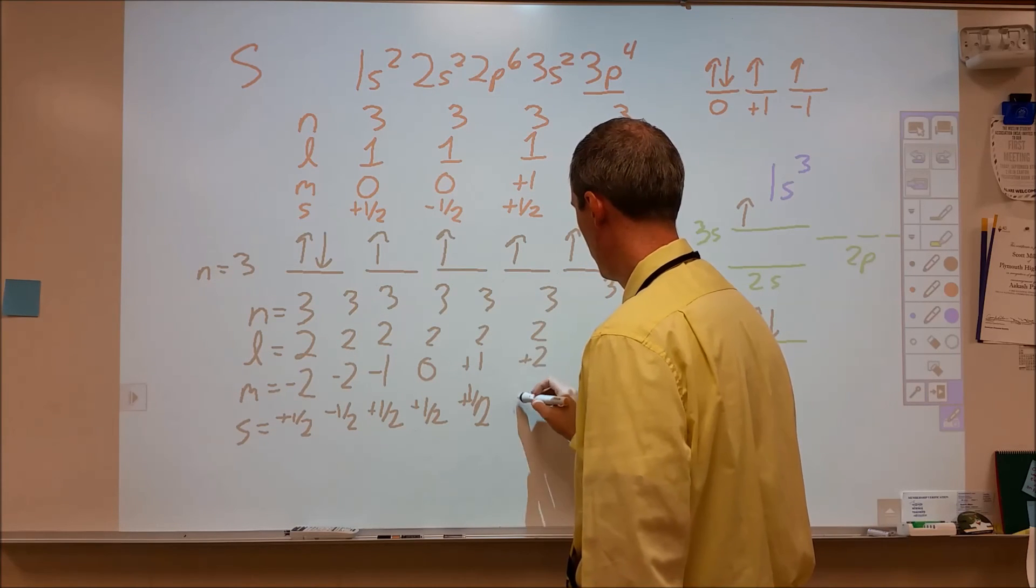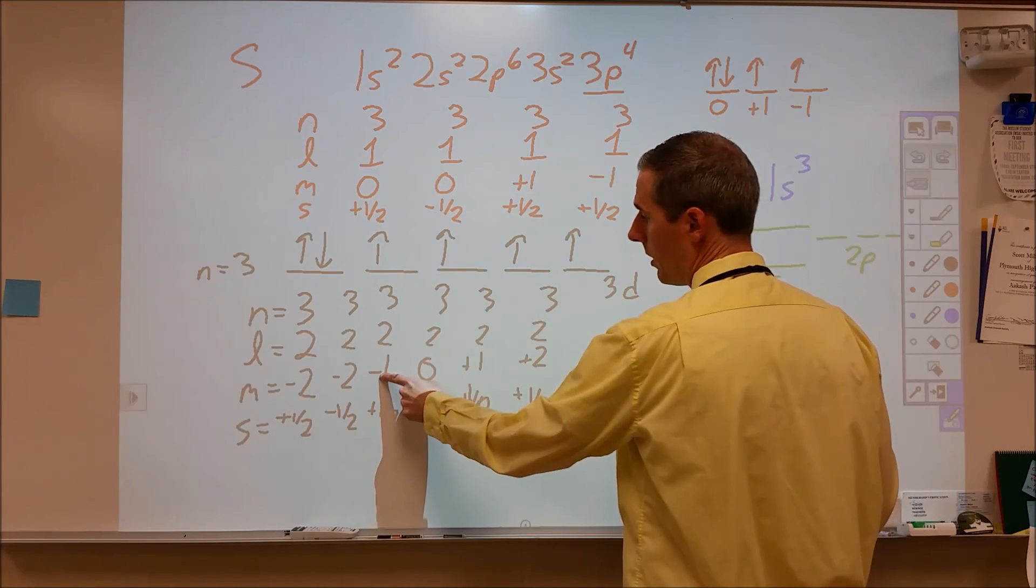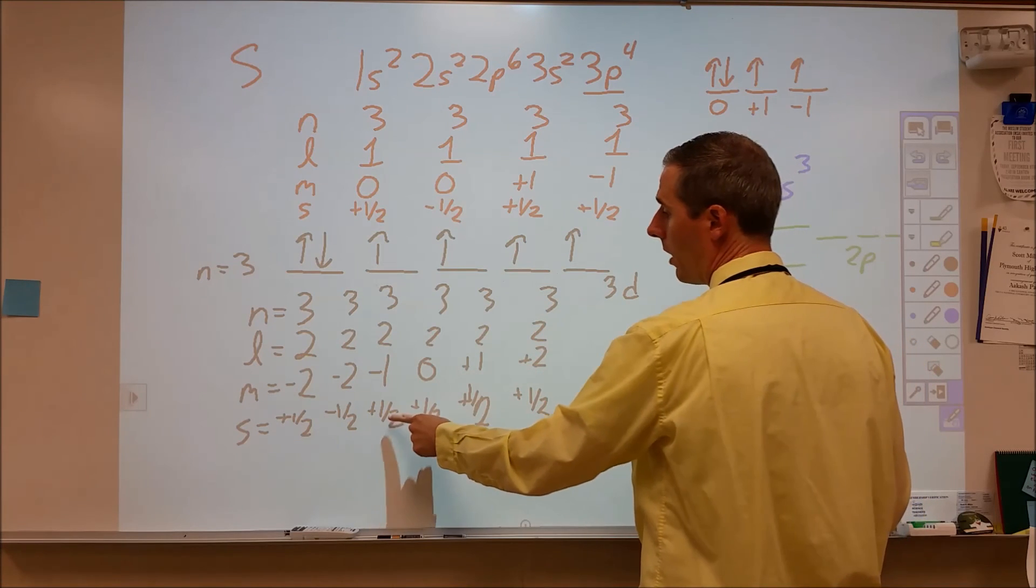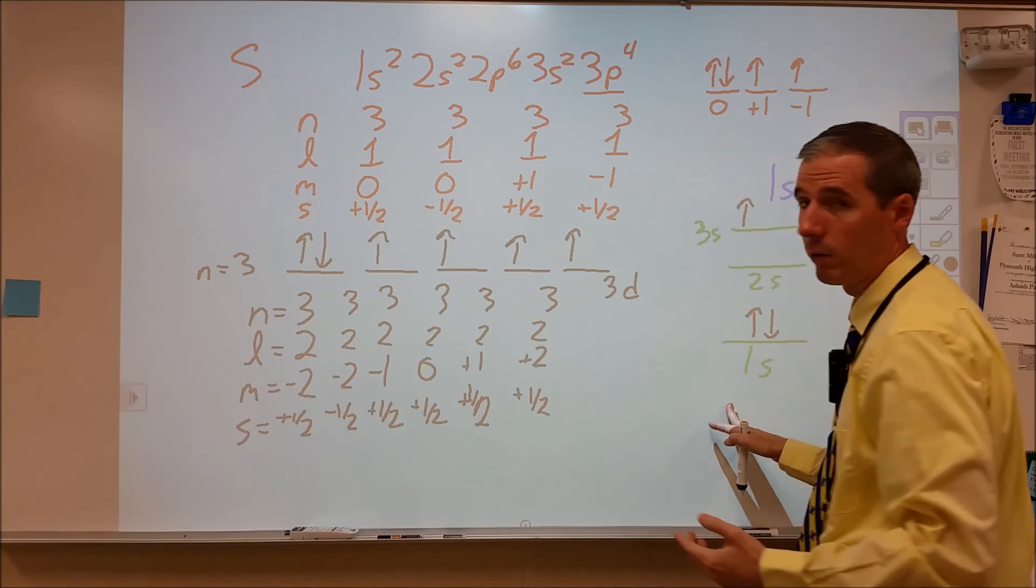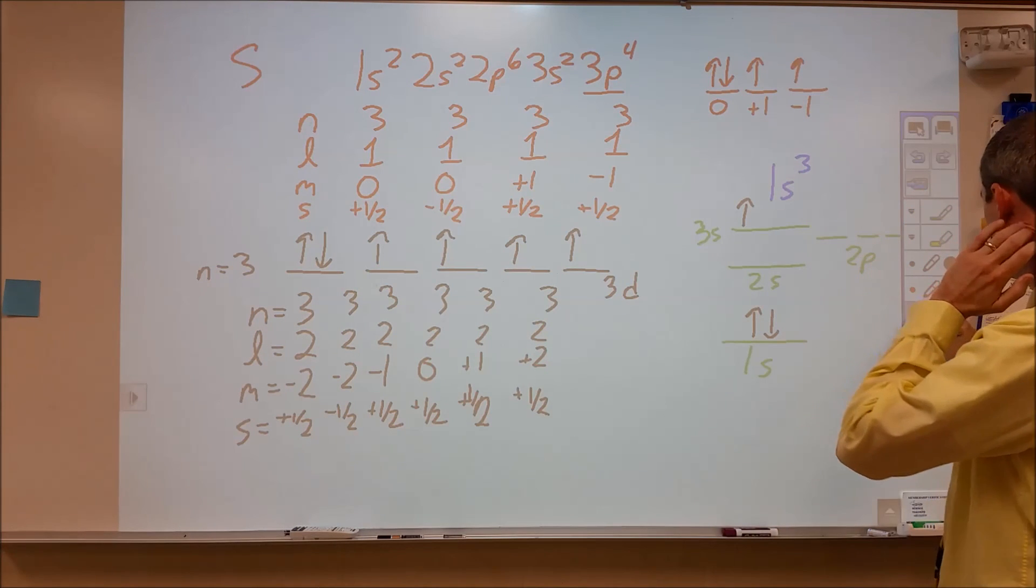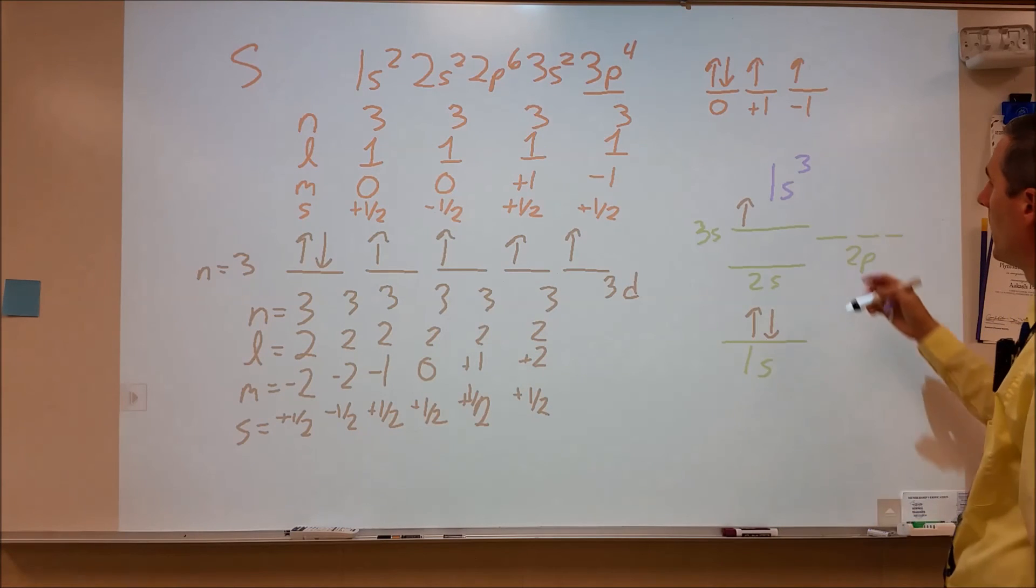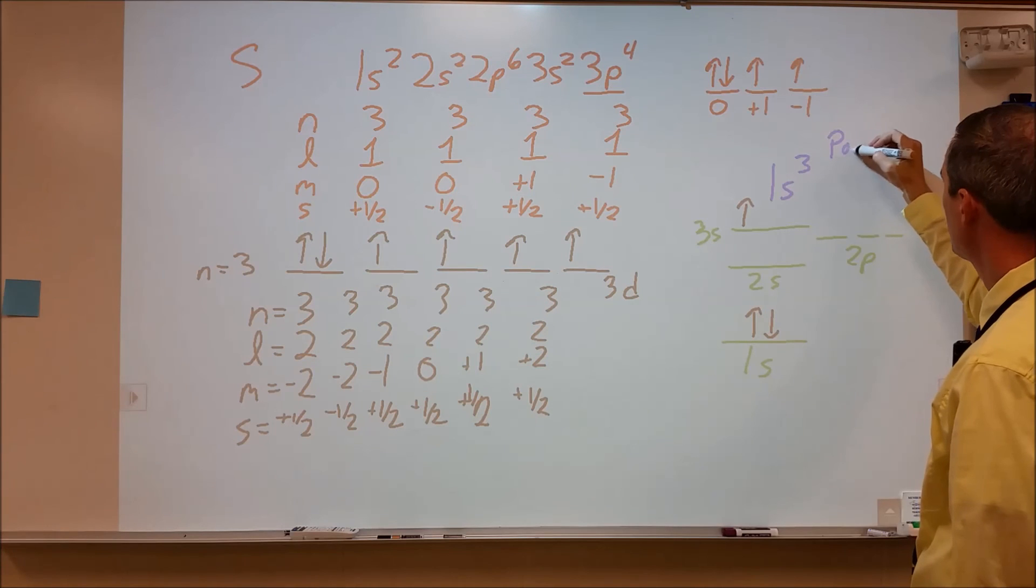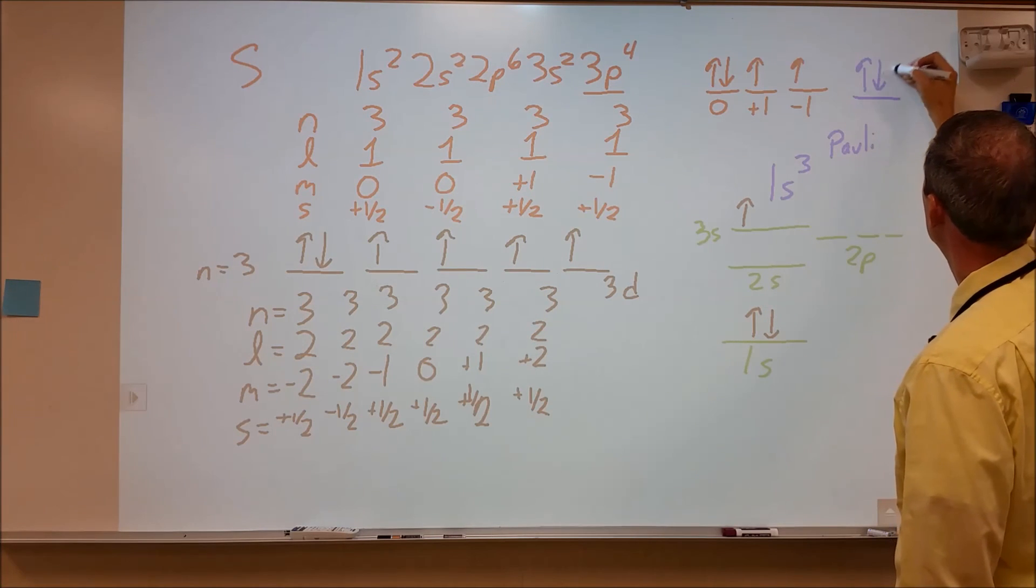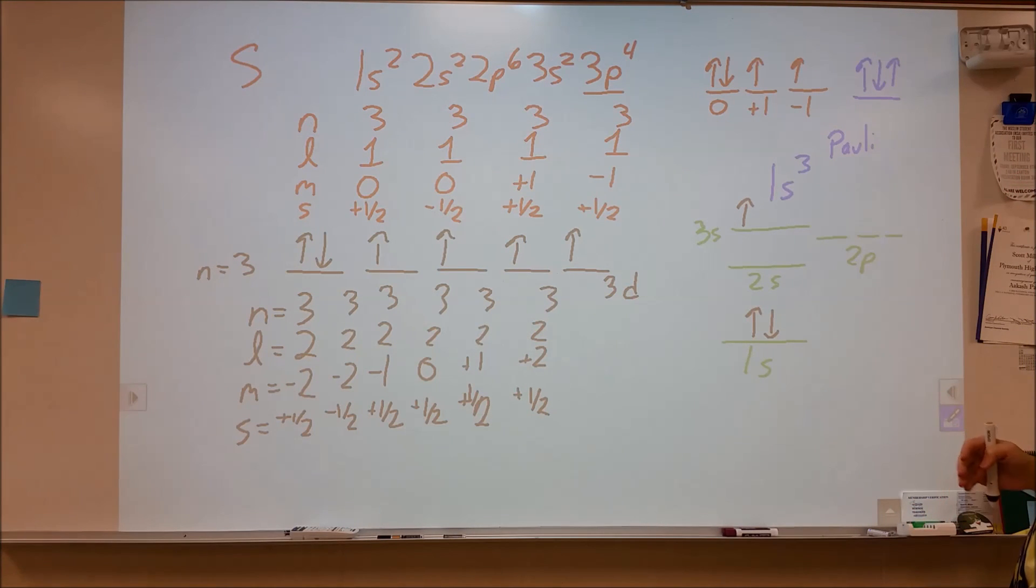If we had to add another electron to this, some things we know is it's going to go into either negative one, zero, plus one or plus two m orbital. And also the spin is going to have to be negative one half. If we look over here in blue, I've drawn 1s3. What rule does that violate was the question I was going for. And so what we see here is that we violated the Pauli exclusion principle. We have more than two electrons in the same orbital, which means we have two electrons that have the same four quantum numbers, and that's a violation.